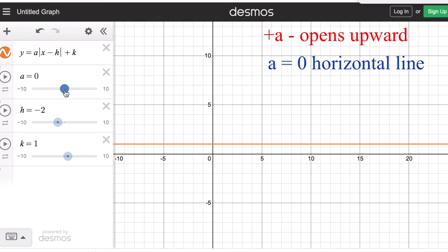On the other hand, if the value of a is negative, the graph of an absolute value equation will open downward.